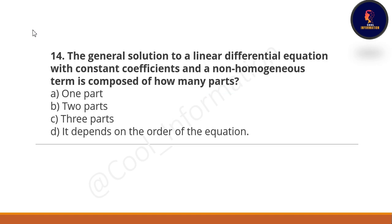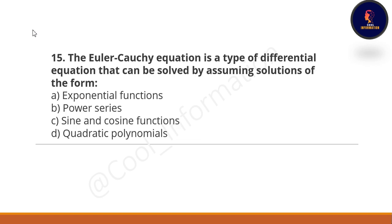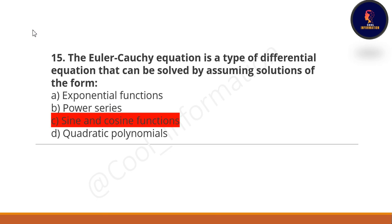Next question: the general solution to a linear differential equation with constant coefficients and a non-homogeneous term is composed of how many parts? The correct option is two parts. And the last question: Euler's Cauchy equation is a type of differential equation that can be solved by assuming solutions of the form — the correct option is sine and cosine functions.